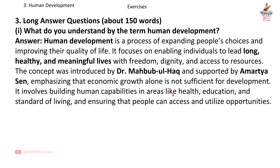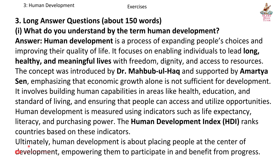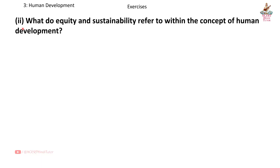It involves building human capabilities in areas like health, education and standard of living, and ensuring people can access and utilize opportunities. Human development is measured using indicators such as life expectancy, literacy and purchasing power. The Human Development Index ranks countries based on these indicators. Ultimately, human development is about placing people at the center of development, empowering them to participate in and benefit from progress.